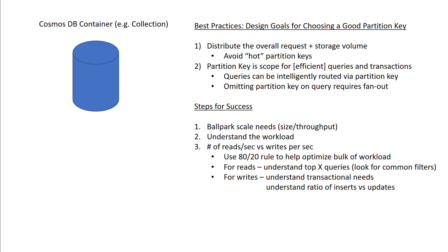If you have a read-heavy workload, get an understanding of your top three or five queries and look at the WHERE clause for common filters — that'll give you a lot of hints for good partition key candidates. For writes, understand your transactional needs. If you have multi-record transactions that need to be done atomically, bake that into your choice of partition key. You might also want to understand the ratio of inserts versus updates — not because it directly impacts partitioning, but as you go through this workload analysis, you can leverage it to start understanding how to model your data in Cosmos DB.